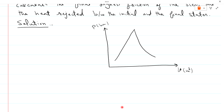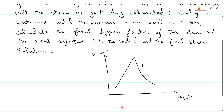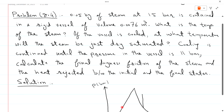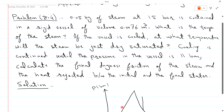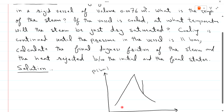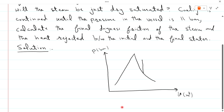Because after cooling it comes to the saturated vapor line. Reading the statement: 0.05 kg of steam at 15 bar is contained in a rigid vessel of volume 0.0076 cubic meters. What is the temperature of the steam? If the vessel is cooled, at what temperature will the steam be just dry saturated? It means that after cooling it comes to dry saturation form, so before that point the steam is superheated. At this point, pressure is equal to 15 bar. This is the saturation point — find TS at this saturation point.